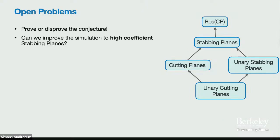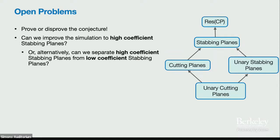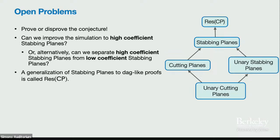That's the end of my talk. A few open problems: first, prove or disprove the conjecture that sub-exponential size cutting planes proofs of Tseitin formulas require super-polynomial depth. Second, can we improve the simulation of stabbing planes by cutting planes from the low-coefficients case to high coefficients? Third, can we prove a separation between stabbing planes and RESCP (the DAG-like generalization), or is there a simulation?